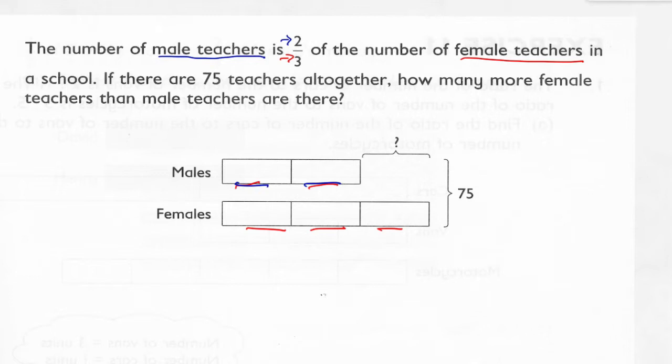Now, they go on to tell us that there are 75 teachers all together. And this bracket shows that's 75 teachers. So what I want to do is take that 75 total. Remember, that's a total. And I want to break it into these five sections. Two male, three female.